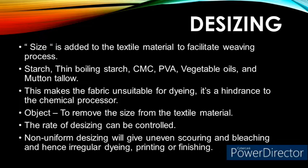Size is added to the yarn in a weaving preparatory process called sizing to facilitate better trouble-free weaving. Normally, size is a combination of components such as starch, thin boiling starch, CMC (carboxymethyl cellulose), PVA (polyvinyl alcohol), and vegetable oils and mutton tallow. These size components are applied to the cotton warp yarns to strengthen them before weaving. Even though it is a necessary process, it is a hindrance for chemical wet processing. Hence, it is required to be removed.